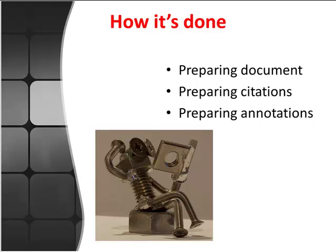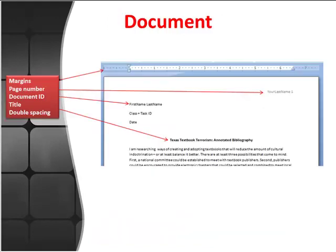If a source looks valuable, you should follow the next two steps in the process: format a citation and write an annotation. Hot tip: If you are unable to locate at least five useful, credible sources fairly quickly, you may need to consider changing your subject or getting in touch with me for some additional help.